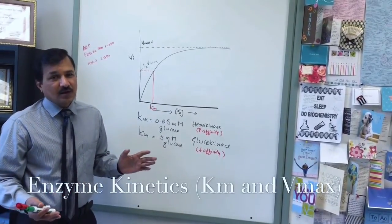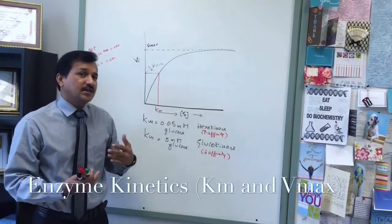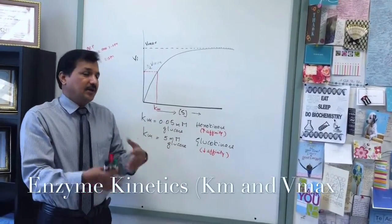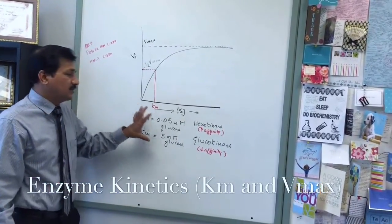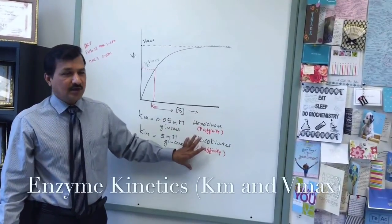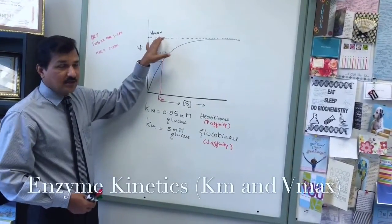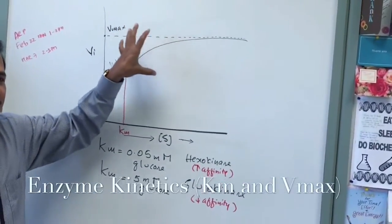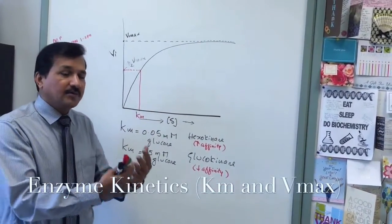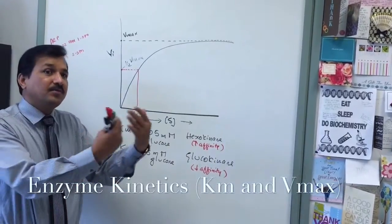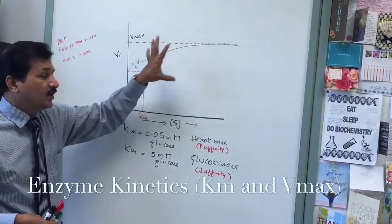KM simply says when the enzyme is active — it does not say how much substrate it is going to consume. I may eat two, three, or four plates — that is my capacity. KM does not say how much substrate the enzyme will consume; that part comes from Vmax. Vmax says how much substrate is consumed by the enzyme — how many plates of food I'm going to eat whenever food is available — that is my capacity.